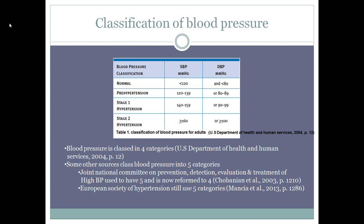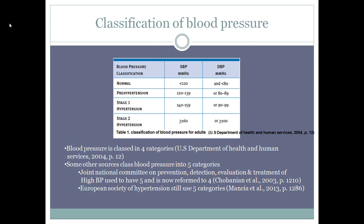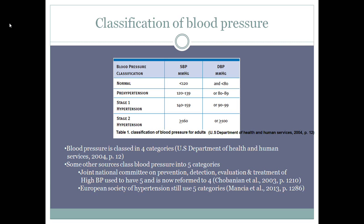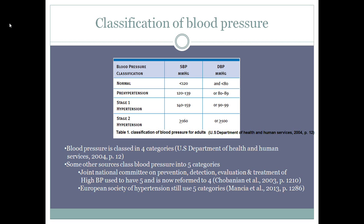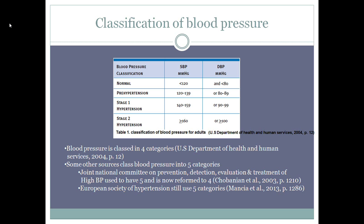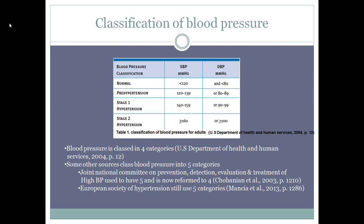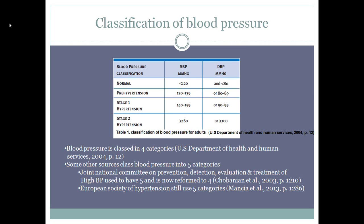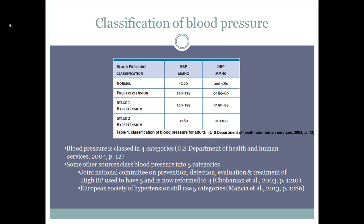Mancia and colleagues, although their article was written 10 years ahead of these other two, still have the categories in five, with the addition of stage 3 hypertension, which is a reading equal to or above 180 over 110. Based on the literature, it appears that stage 2 and stage 3 hypertension are similar in terms of management, making this extra group appear unnecessary.